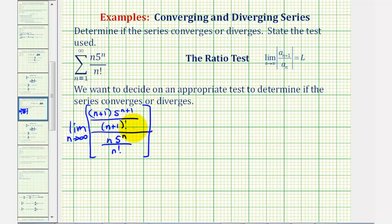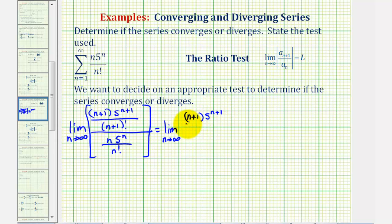So we have this top fraction divided by the bottom fraction, which we can also write as a multiplication problem — instead of dividing by the bottom fraction, we multiply by the reciprocal. This is equal to the limit as n approaches infinity of the top fraction, times n factorial on top and n times five to the n on the bottom.